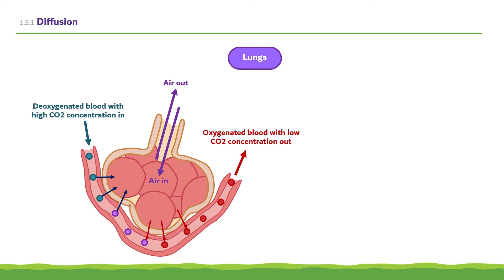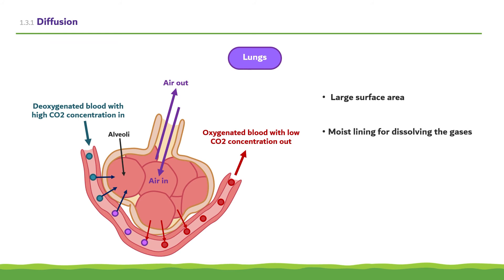Gas exchange in the lungs occurs within tiny air sacs called alveoli. The alveoli are specialised in a number of ways for efficient gas exchange: they have a large surface area, a moist lining for dissolving gases, thin walls to provide a short diffusion pathway, and a very good blood supply.